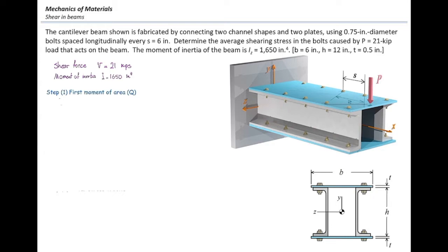We can assume that the top plate, the one shown in blue, is connected to the rest of the section, including the two C-channels on the side and the other plate on the bottom. Q is going to be area multiplied by D. Area is B multiplied by T. The width of the top plate is 16 inches, not 6 inches, so the area is 8 square inches. D is the distance from the centroid of the top plate to the centroid of the entire section.